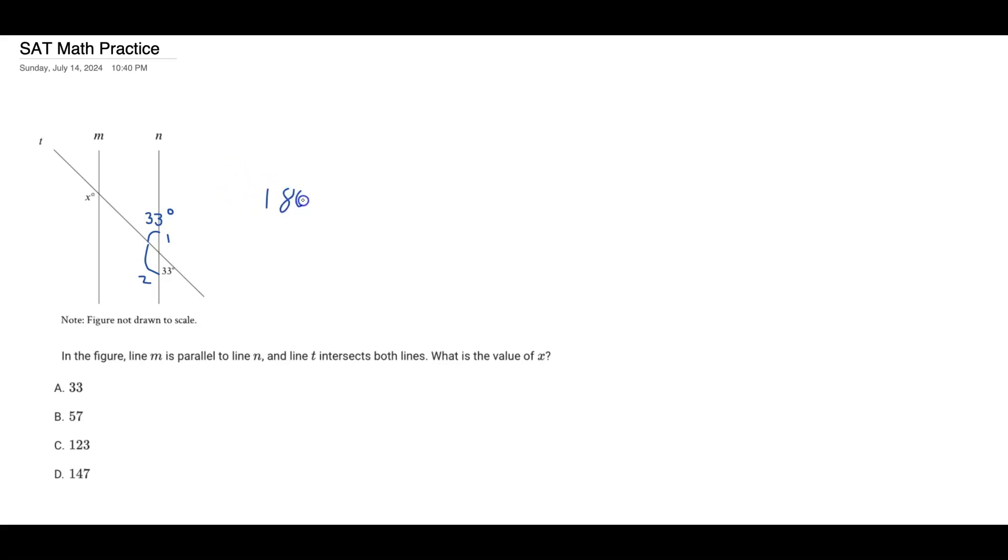And so if we know the total between those two angles is 180 degrees, we just found angle one, then we can find angle two. And so angle two here will be 147 degrees.